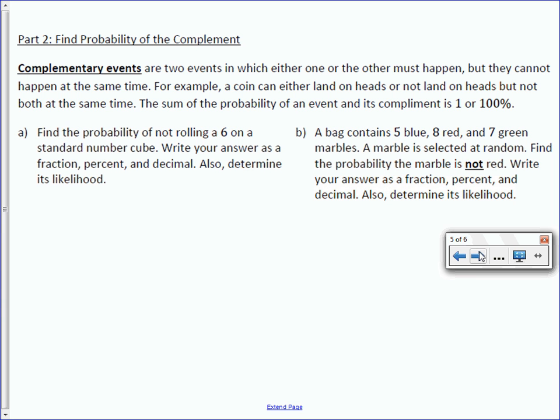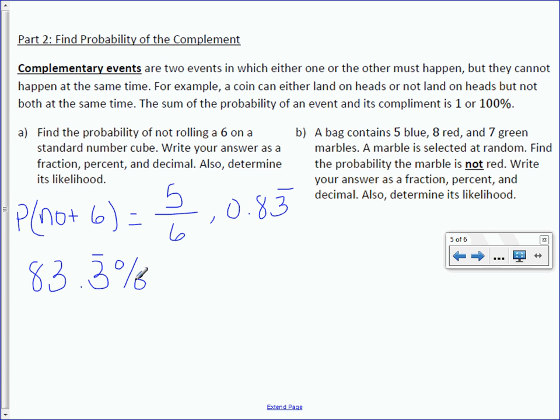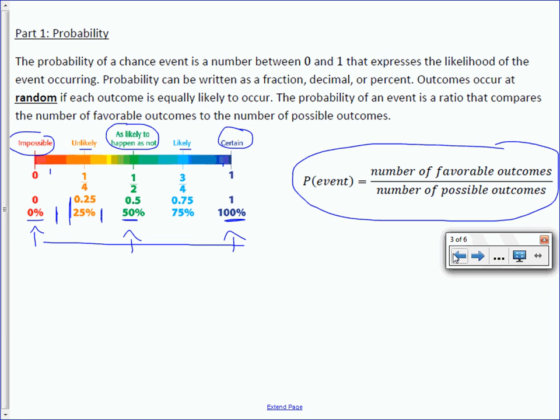Find the probability of not rolling a 6 on a standard number cube. Write your answer as a fraction, percent, and decimal. Also determine its likelihood. So the probability of not 6. Well, there are 6 total outcomes, not 6. There's 1, 2, 3, 4, and 5, which make 5 out of 6 as our probability. Divide 5 divided by 6 to get the decimal, which is 0.83 repeating. Multiply it by 100 to get the percent, which is 83.3 repeating percent. And let's look at the likelihood. 83 is over here, which means it's likely.